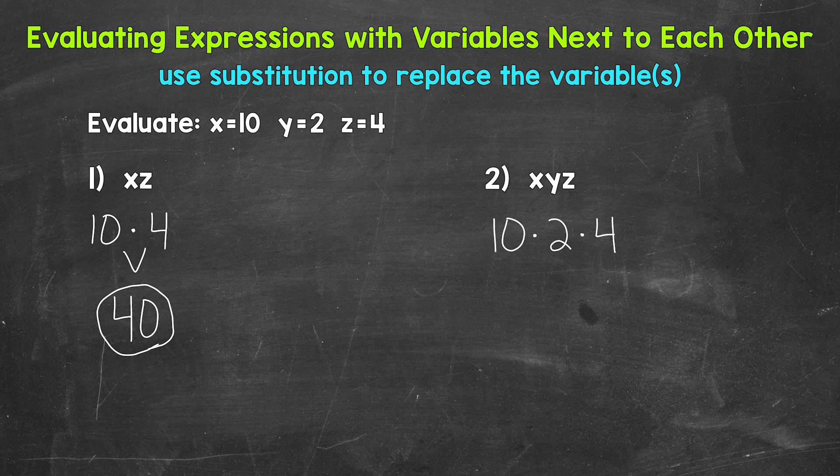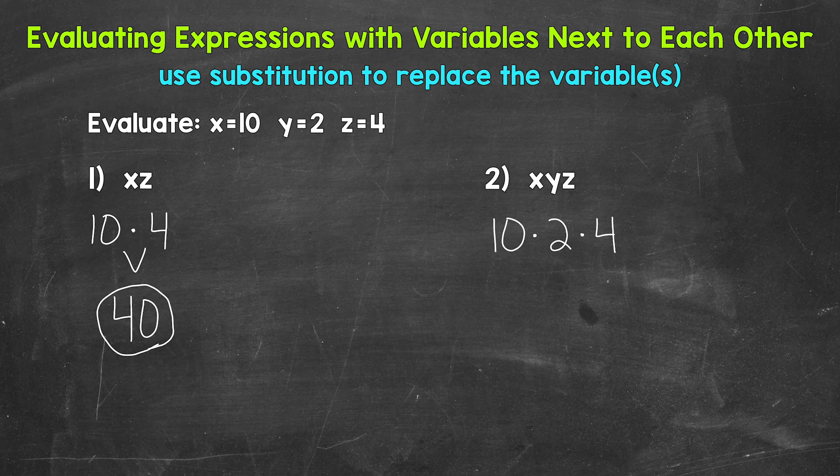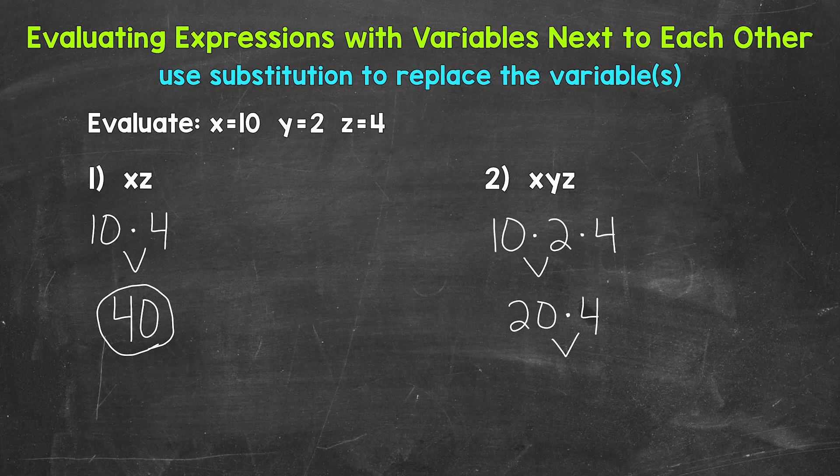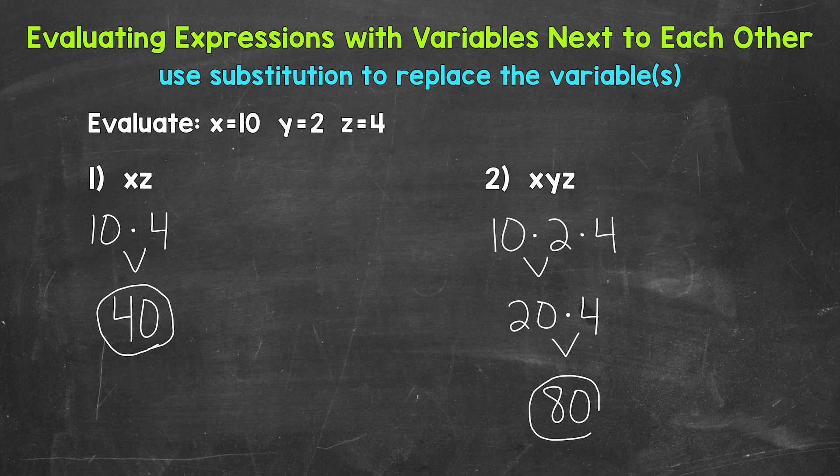Now we can multiply. We will multiply from left to right. So we can start with 10 times 2. That gives us 20. Bring down our multiplication sign and the 4. Then we end with 20 times 4, which is 80. So the value of this expression is 80, when x equals 10, y equals 2, and z equals 4.